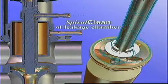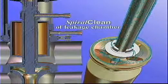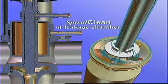SpiralClean can be specified for the leakage chamber. A small spray turbine is mounted to provide an optimum flow pattern.